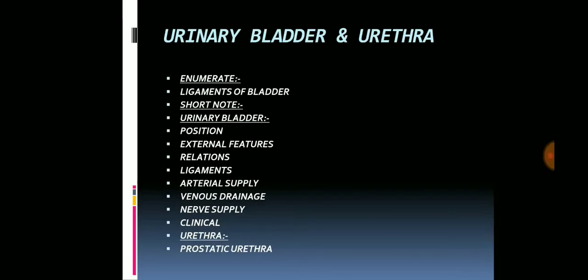Moving on to the urinary bladder and the urethra. The enumerate questions asked include the ligaments of the bladder. Generally from the pelvic portion of anatomy, short notes and long questions are asked, and the enumerate questions are very few. From this chapter, the short note comes on the urinary bladder and the urethra.